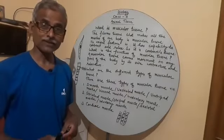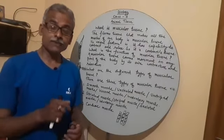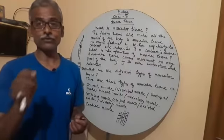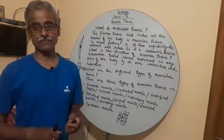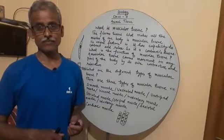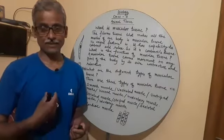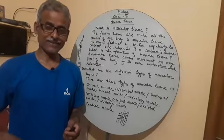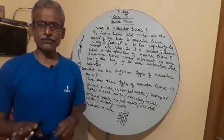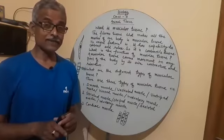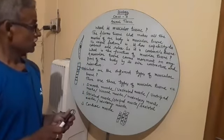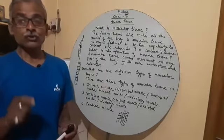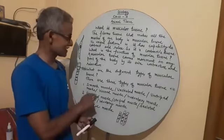These muscles are found in our visceral organs — that is, boneless organs. These include our intestine, the gastric, the esophagus, and the kidneys. All these organs are boneless, and they all have unstriated or smooth muscles, which is why these smooth muscles are also called visceral muscles.